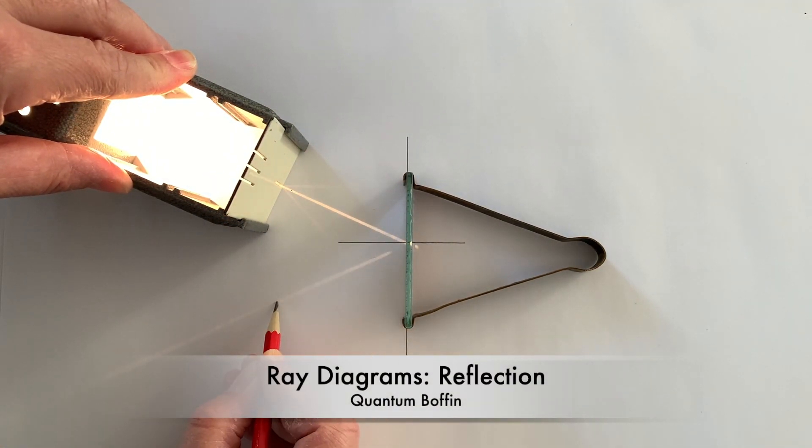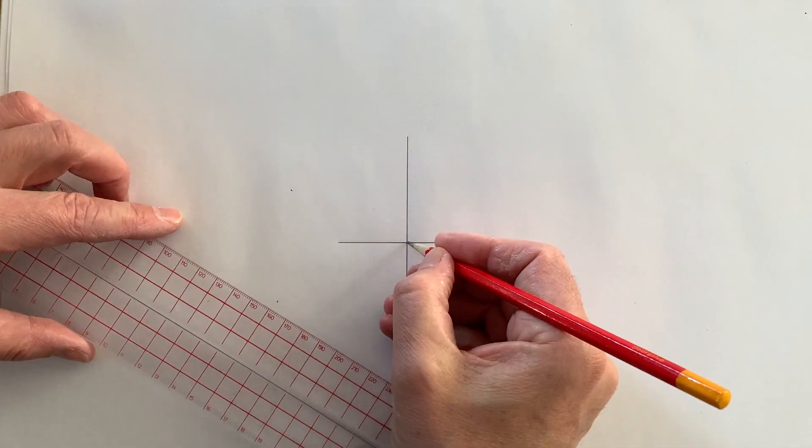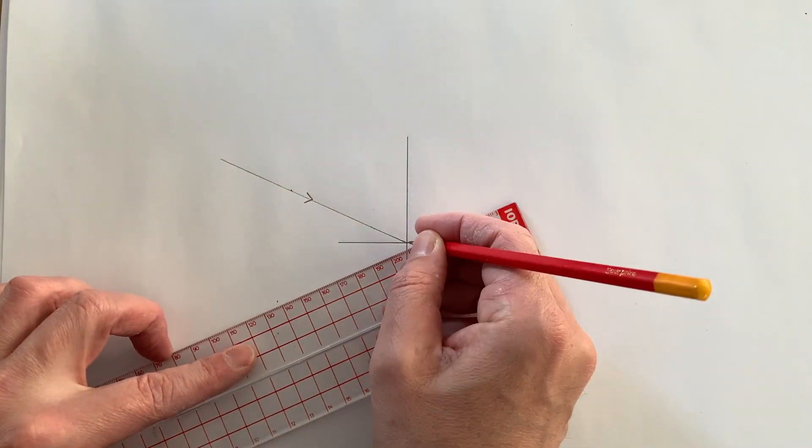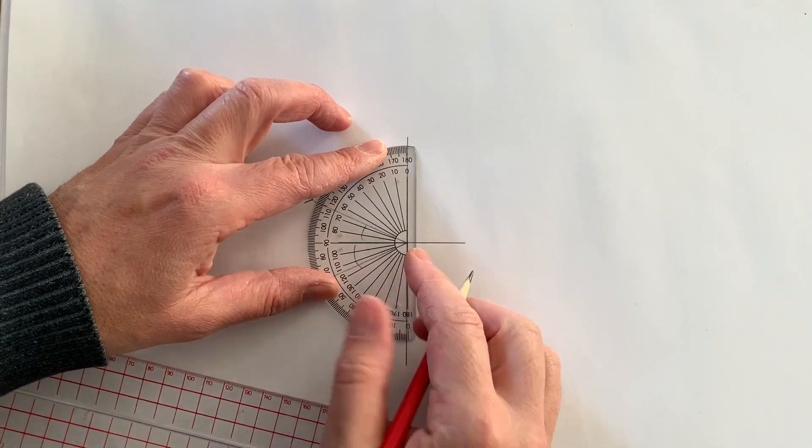When light reflects off a mirror, it does so in such a way that the angle of reflection is always equal to the angle of incidence.